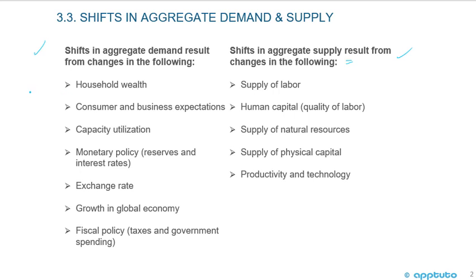Let's look at shifts in aggregate demand first. There are a few reasons why the aggregate demand curve can shift: one, changes in household wealth; two, consumer and business expectations; three, capacity utilization; four, monetary policy — reserves and interest rates; five, changes in exchange rate; six, growth in the global economy; and seven, fiscal policy — taxes and government spending.